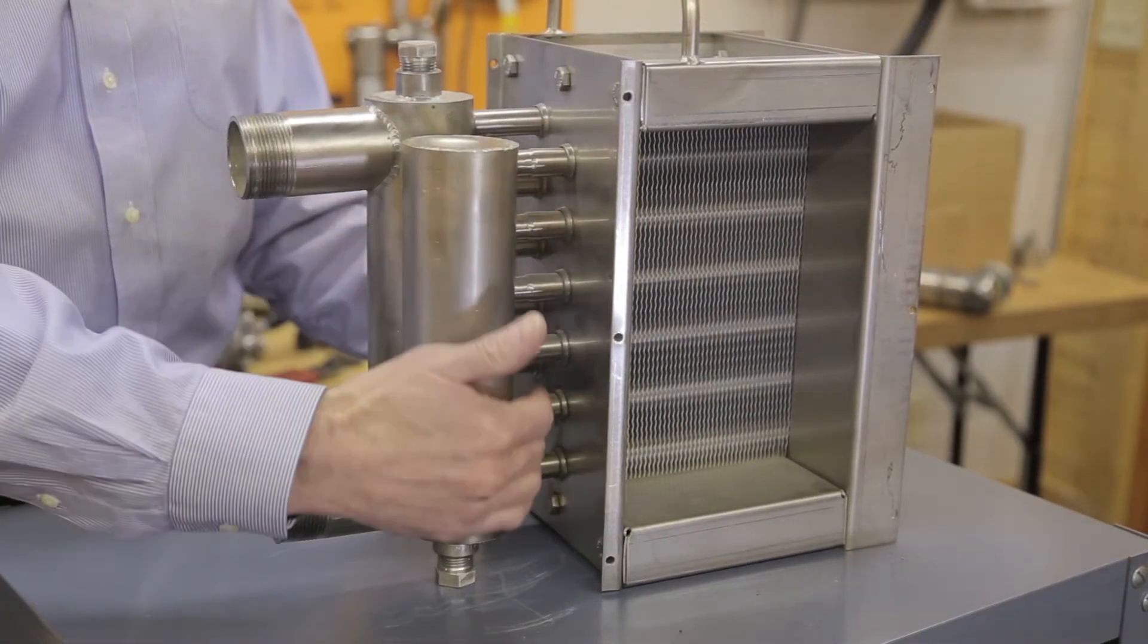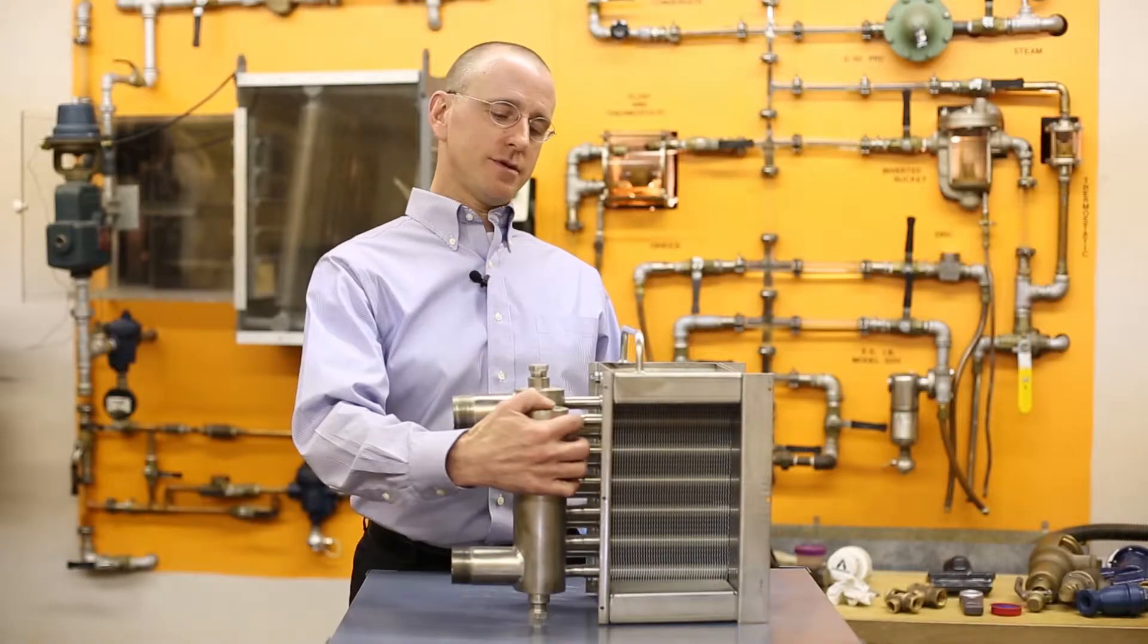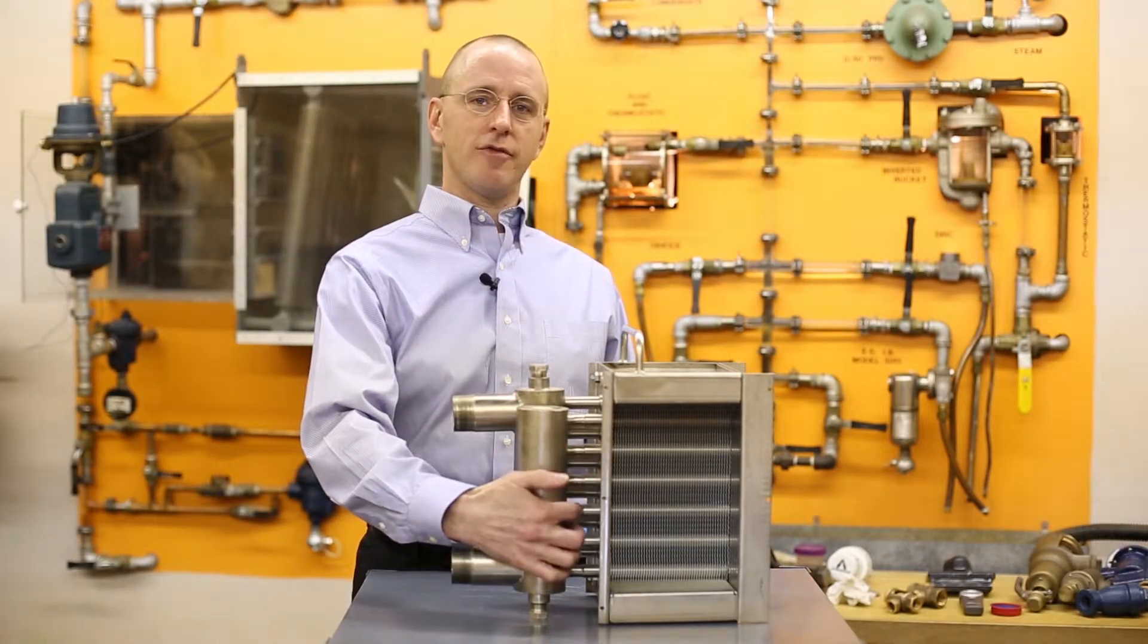Our tube diameters for fluid coils are three eighth inch, half inch, five eighth inch.